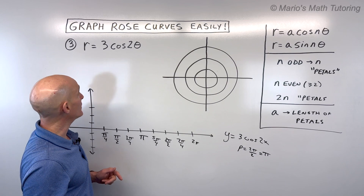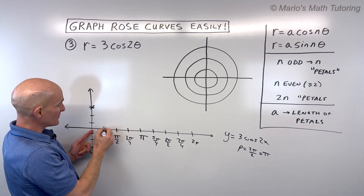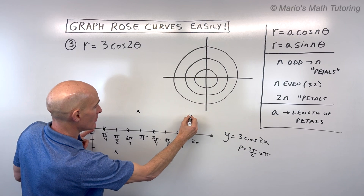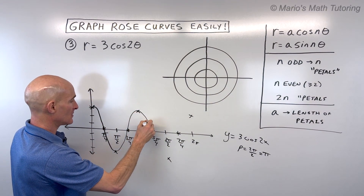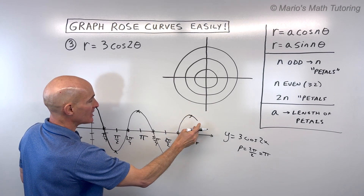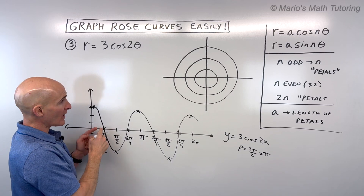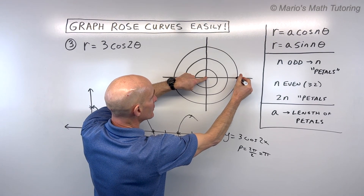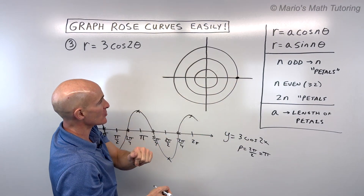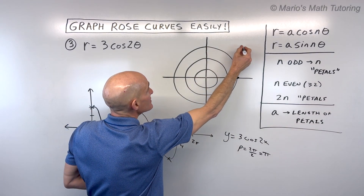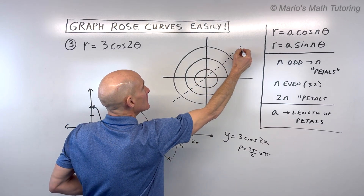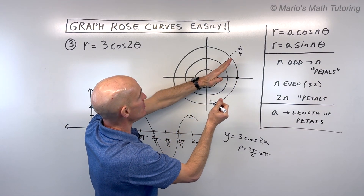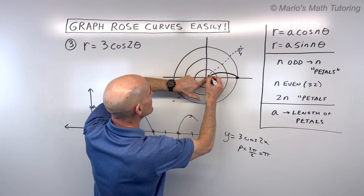The amplitude is 3, and the cosine graph starts at the maximum. So the pattern is: maximum, 0, minimum, 0, maximum, 0, minimum, 0, maximum — repeating across one revolution. When we transfer to polar, at an angle of 0 the r value is 3, so we're 3 units out from the pole. As we make our way to π/4, the r value is getting smaller and smaller — reeling it in — getting closer and closer to the pole.